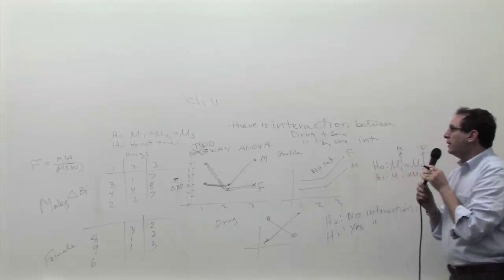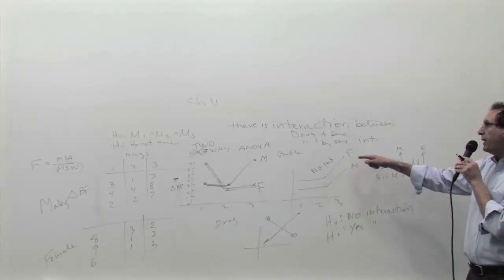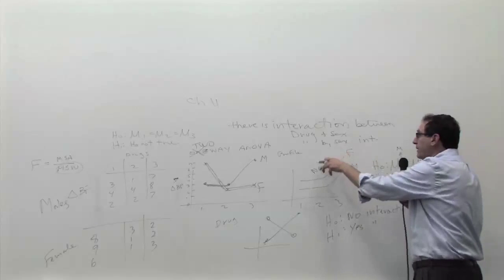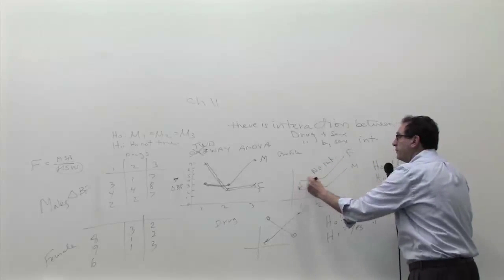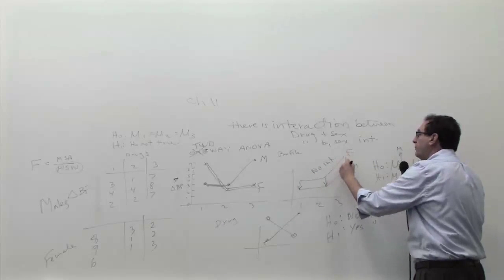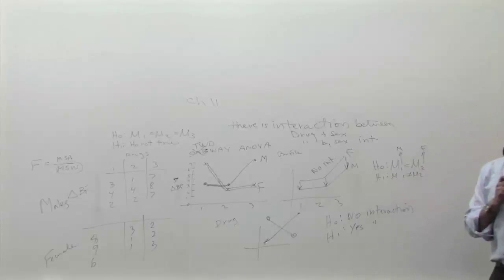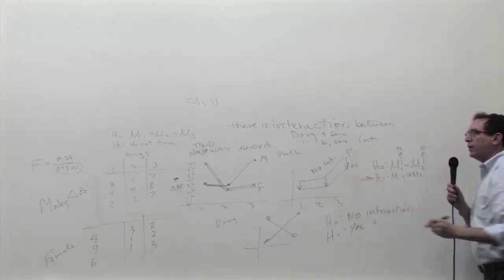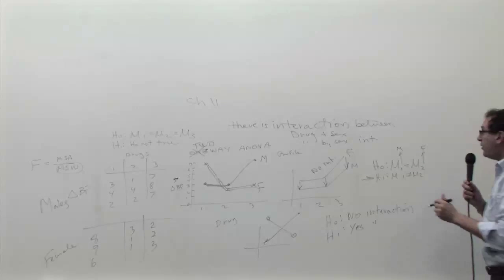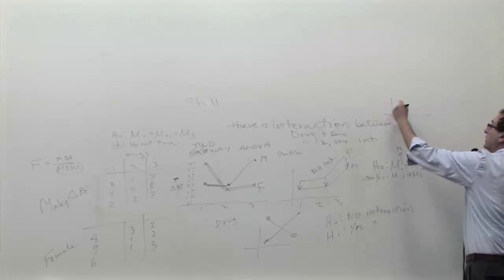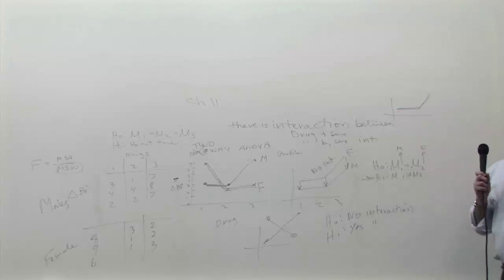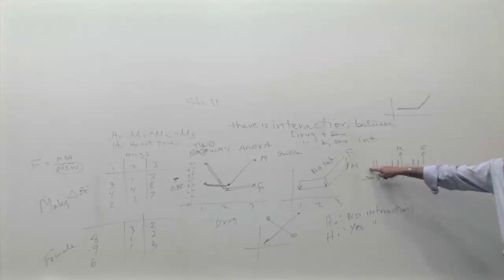But we can also answer the other. Once we decide there's no interaction, let's go back. Are the males and females the same? Well, it looks like the females are consistently better than the males. They're better for drug one, they're doing better than drug two, and they're doing better in drug three. Females are different than males on all three drugs. So this, you basically would prove the H1 in that case. On the other hand, if the picture looks something like this. This is the male picture, and this is the female picture. They're basically the same. So this would be, you basically prove the H0.